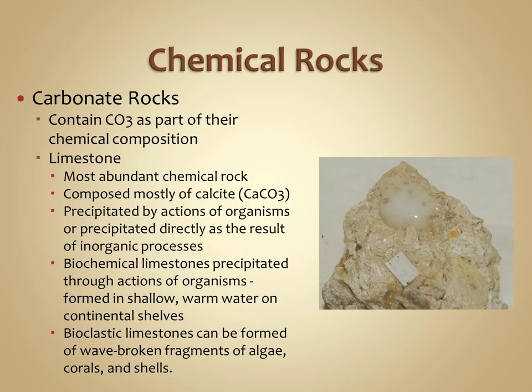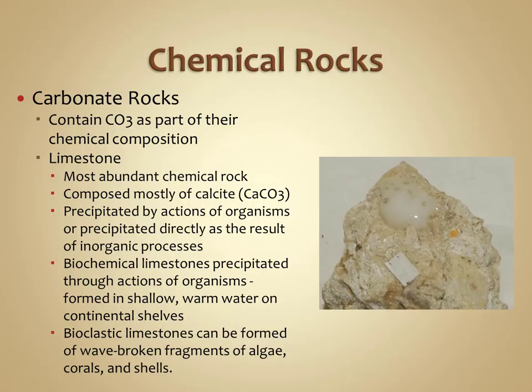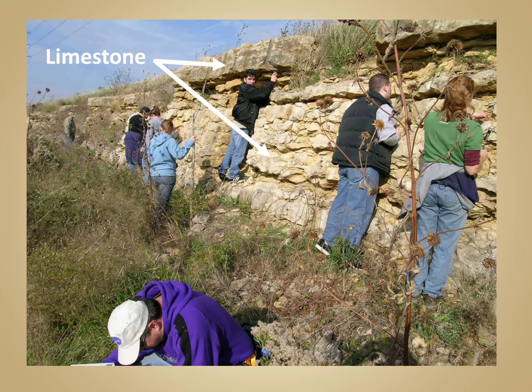Limestone is by far the most abundant chemical rock. Limestones typically form through biochemical processes such as marine organisms precipitating calcite from seawater solutions. Because limestones are rich in calcite, they are often easy to identify as calcite effervesces or fizzes when in the presence of acid. Since most biochemical limestones are precipitated through the actions of marine organisms, they are often indicative of shallow, warm water, continental shelf type environments.